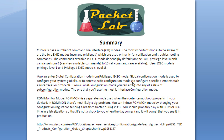Let's wrap this up. Cisco IOS has a number of CLI modes. The most important to be aware of are the two exec modes: user exec and privileged exec, used primarily for verification and troubleshooting. The commands available in exec mode depend on the exec privilege level, which ranges from 0 — a very limited command set — all the way up to 15, which has all commands available. User exec mode is privilege level 1, and privileged exec mode is level 15. Think of level 1 as read-only access, and privileged exec as super-user or god mode. The other major CLI mode is configuration mode, entered from privileged exec using the 'configure terminal' command, which has a slew of sub-configuration modes including interface configuration mode.